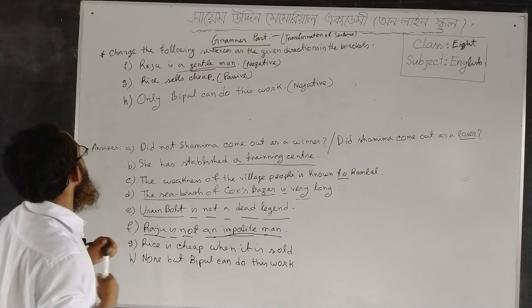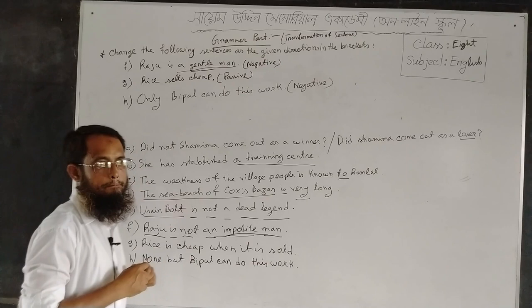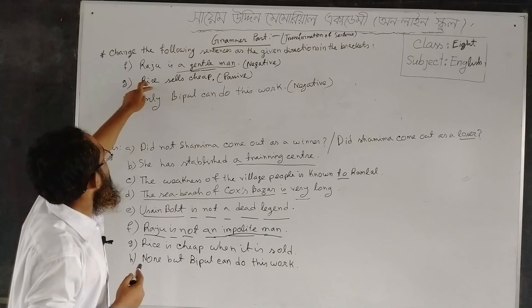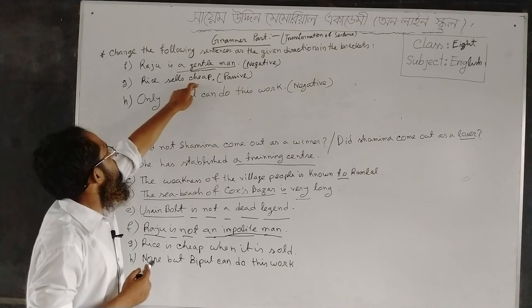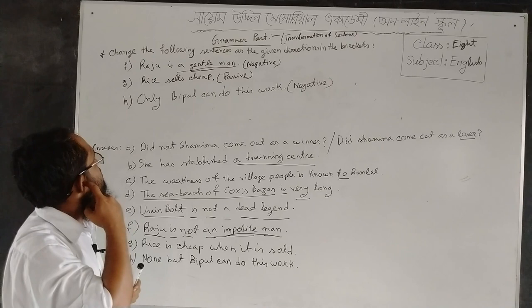Sentence G: Rice sells cheap. Passive is in the bracket. This is a sentence of present indefinite tense and the verb is a quasi-passive verb. So you have to change this sentence according to the rules of quasi-passive voice.